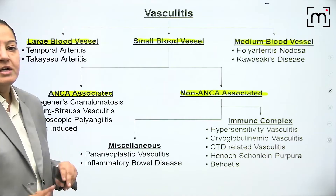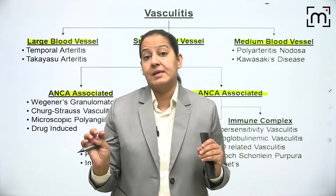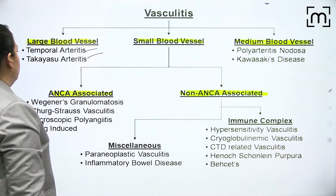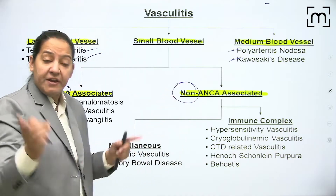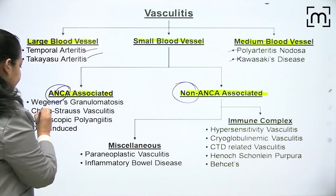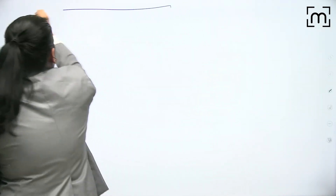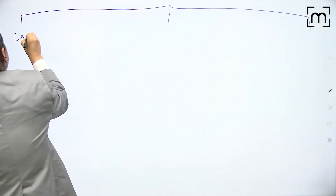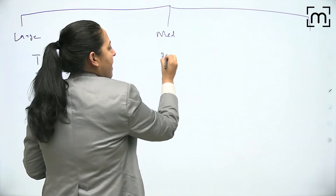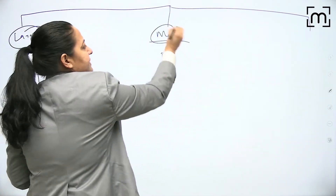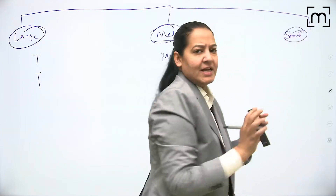To summarize the classification based on size: large vessel has temporal and Takayasu; medium vessel has PAN and Kawasaki; small vessel is divided into ANCA positive and ANCA negative. C-ANCA positive is only Wegener's; p-ANCA positive is Churg-Strauss and microscopic PAN. ANCA negative includes Henoch-Schönlein purpura and Behcet's disease.